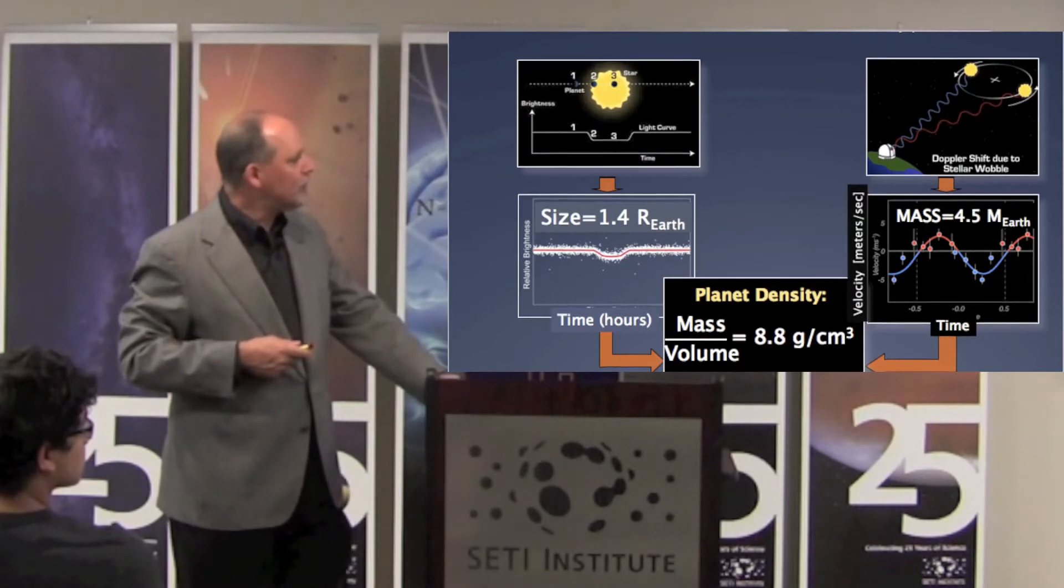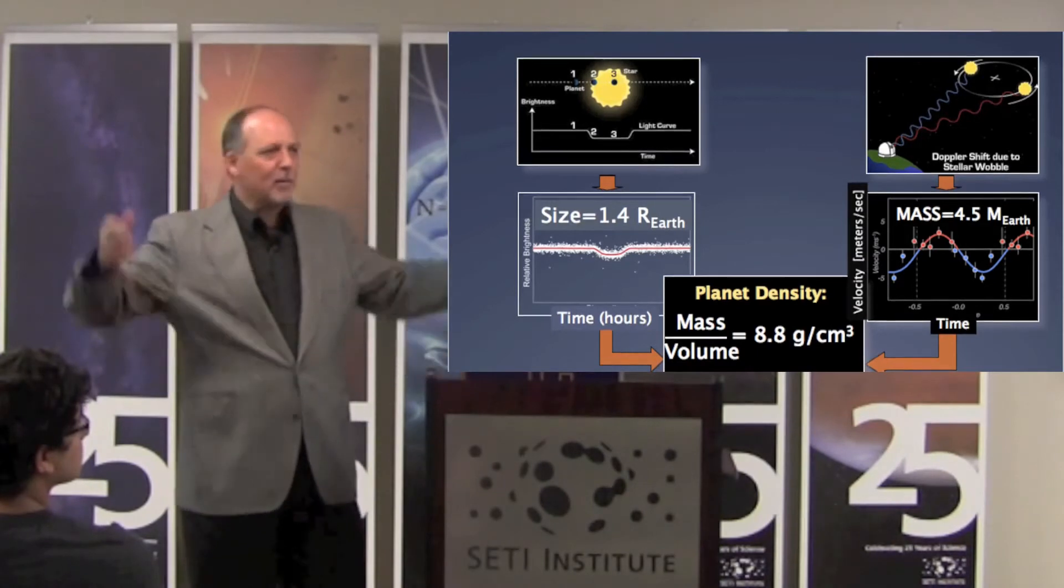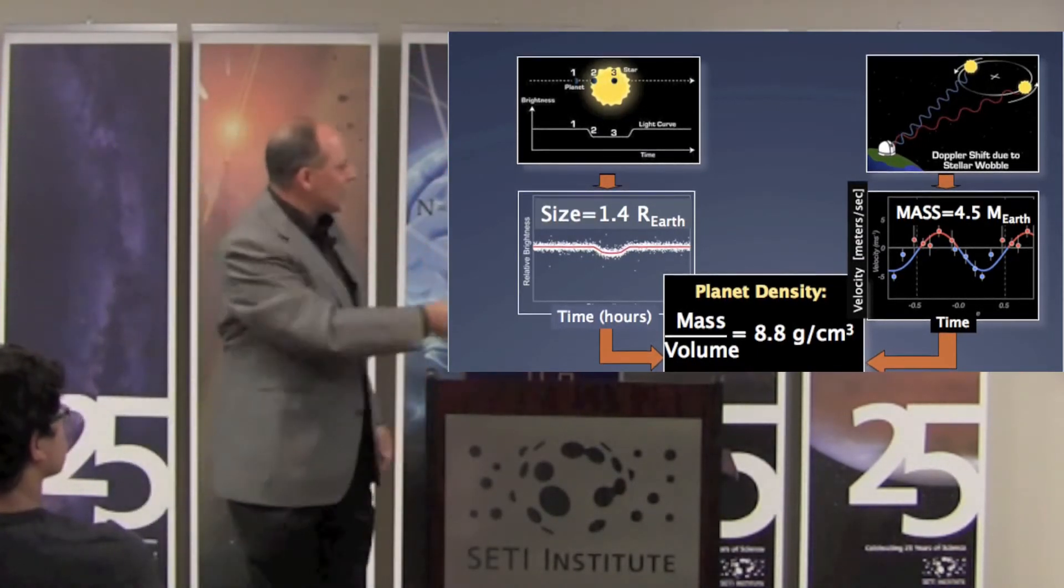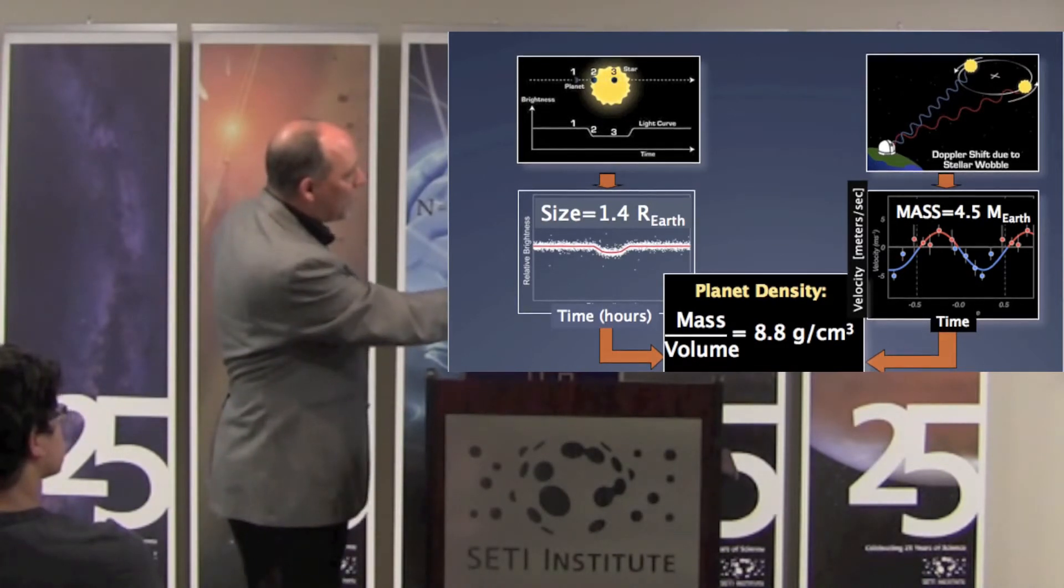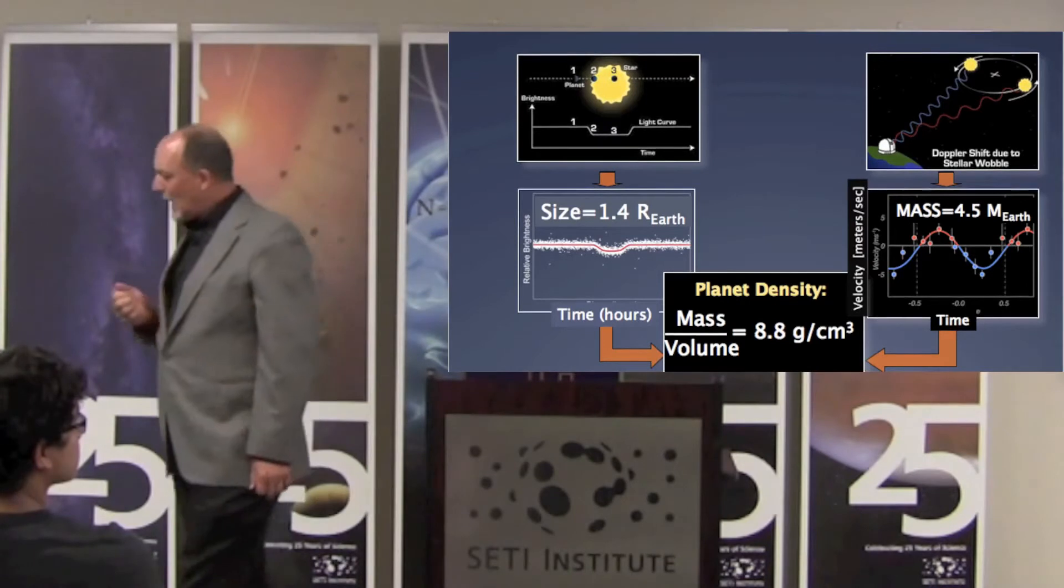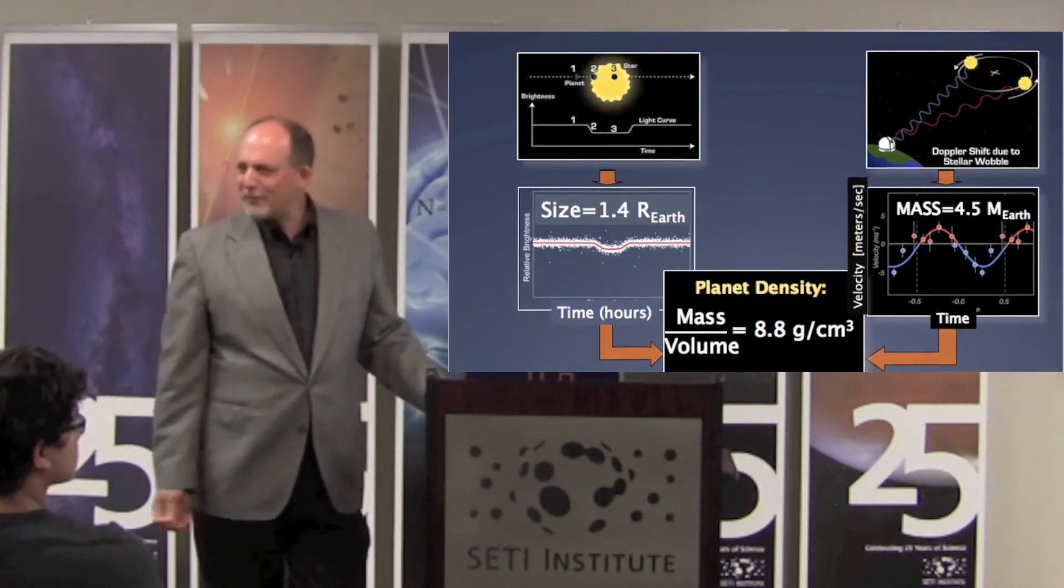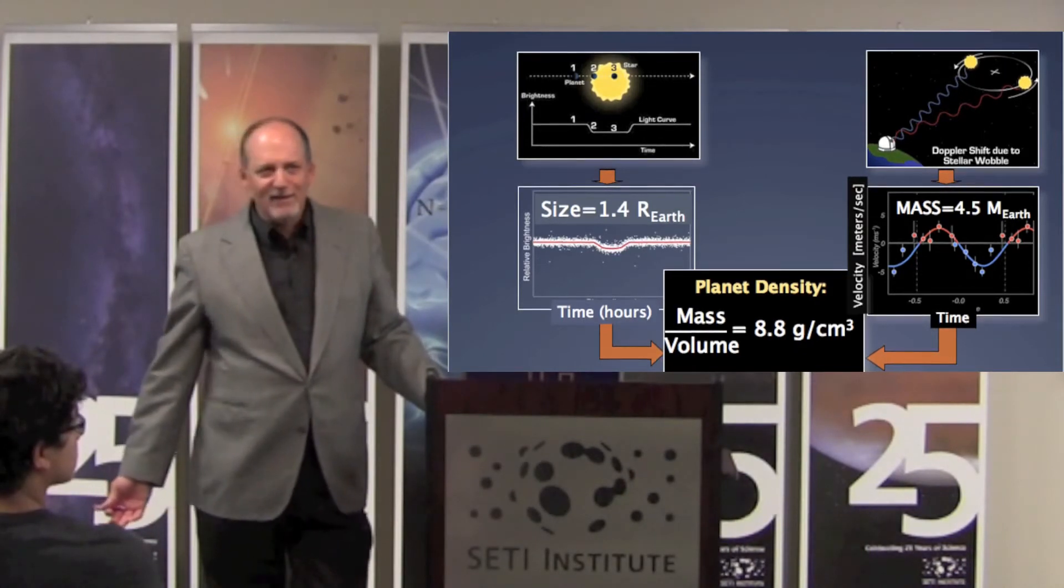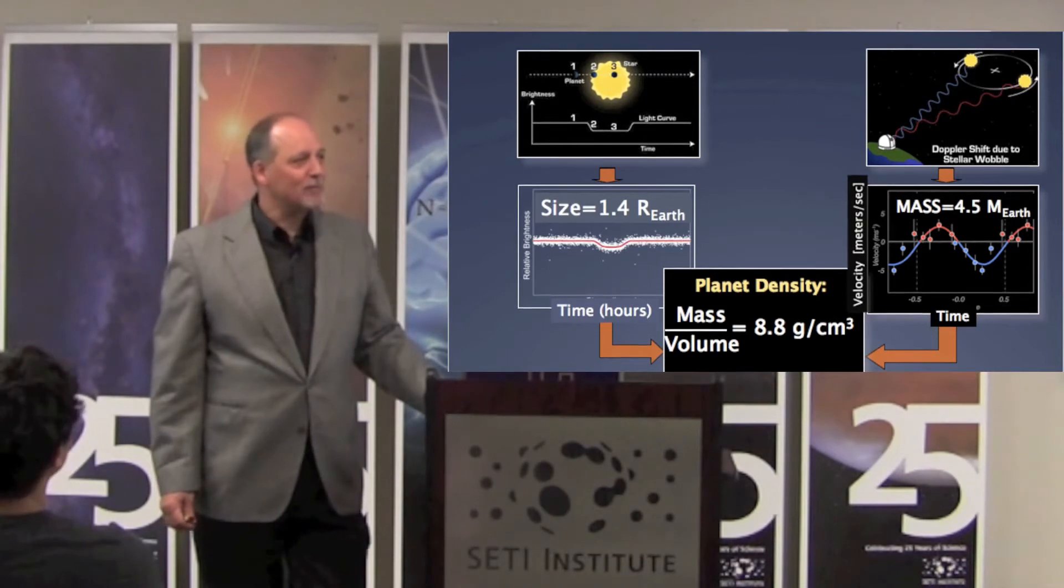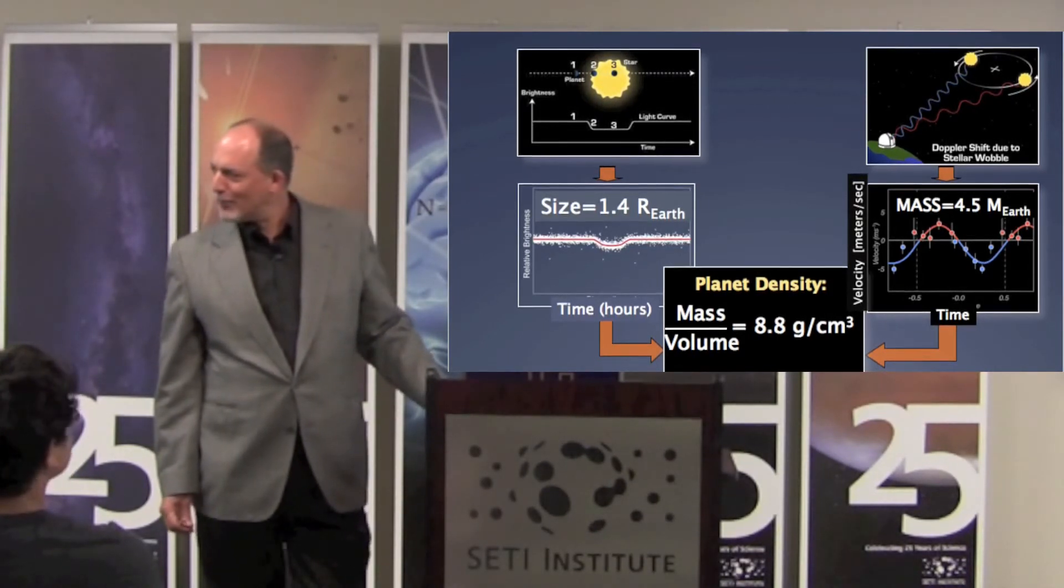And if you put those two together, you can determine therefore the density of the planet. Remember, mass of an object divided by the volume of an object is density. And in this case we get 8.8 grams per cubic centimeter. Well at first that doesn't mean a thing to me, but if you think back to your high school chemistry days, can you remember your high school chem?